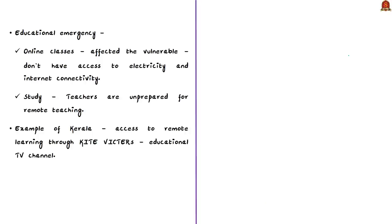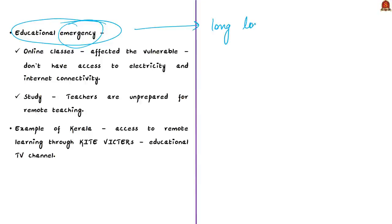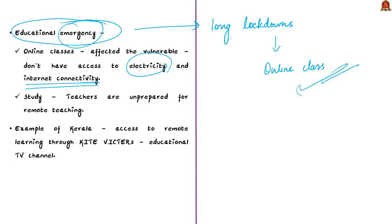The authors refer to the continuous closure of educational institutions as the largest educational emergency in the world. India experienced a continuous and longer period of lockdowns in the education sector, with children being taught through online classes only. This has severely affected children belonging to vulnerable sections — Dalits, tribals, etc. — who do not have internet connectivity, often because they lack access to electricity itself. Many studies also indicate that teachers are unprepared for remote teaching — classes conducted outside a physical classroom using online modes.